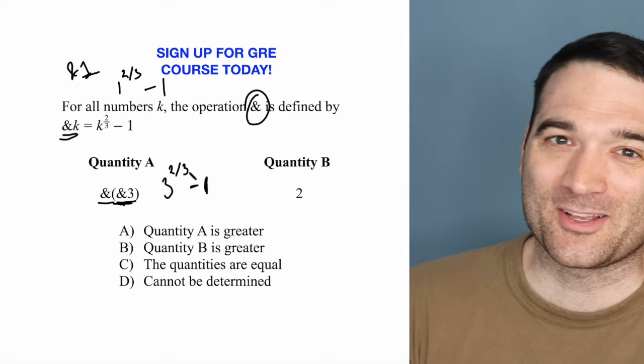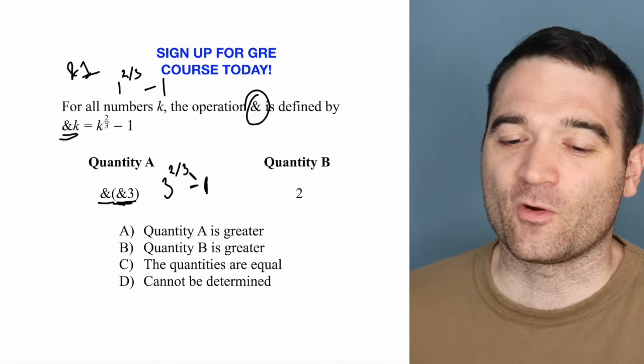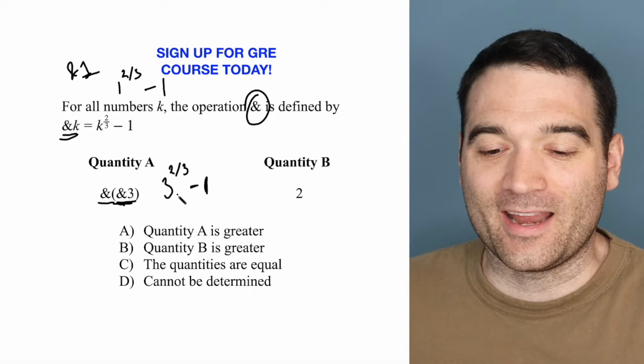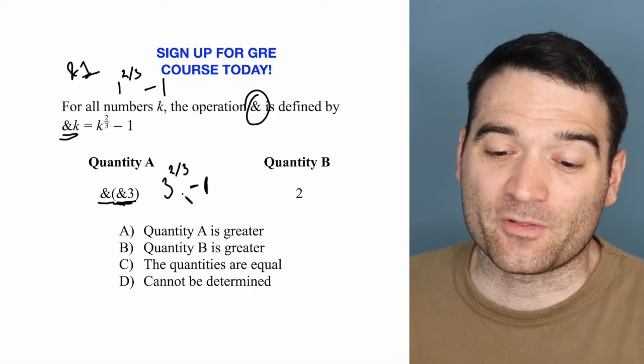And if you want to test this on a normal calculator, go for it. But three to the power of one is three. So three to the power of two-thirds is going to be smaller than that.